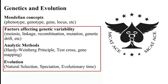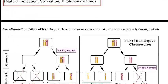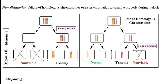Continuing on with factors that can affect genetic variability, one other factor that can cause genetic variability in offspring is error during meiosis. This type of error, referred to as non-disjunction, is from failure of either the homologous chromosomes or the sister chromatids to separate properly from each other during meiosis.